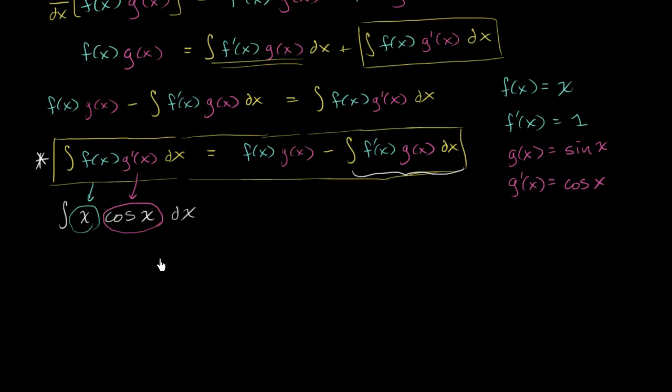So this has all of this. Let's see, the right-hand side says f of x times g of x. So f of x is x, g of x is sine of x. And then from that, we are going to subtract the antiderivative of f prime of x, well that's just 1,